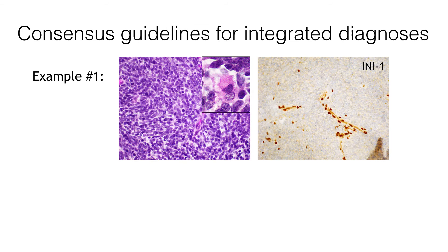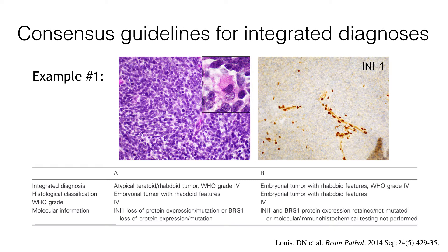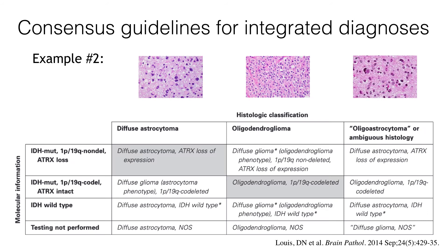For example, in this tumor — an embryonal appearing tumor with small round blue cells that are densely packed — some cells have a rhabdoid appearance, and by immunohistochemistry there is loss of INI-1 protein. Using this four-layer integrated diagnosis system, this is histologically an embryonal tumor with rhabdoid features, and the loss of INI-1 by immunohistochemistry allows us to issue the specific integrated diagnosis of atypical teratoid rhabdoid tumor, WHO grade 4. In the absence of INI-1 loss or BRG1 loss, we would be left with the histologic impression of embryonal tumor with rhabdoid features — either way, still a grade 4 tumor.